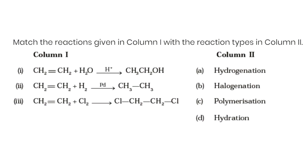Let's start with matching. This question matches the reaction given in column one with the reaction type in column two. In column one I have the reaction, in column two I have the type. The third one is a double bond reacted with water in the presence of a catalyst in acidic media to produce alcohol. This is an addition of water — an addition reaction for a double bond. The water is added to the double bond, so it's a hydration reaction.